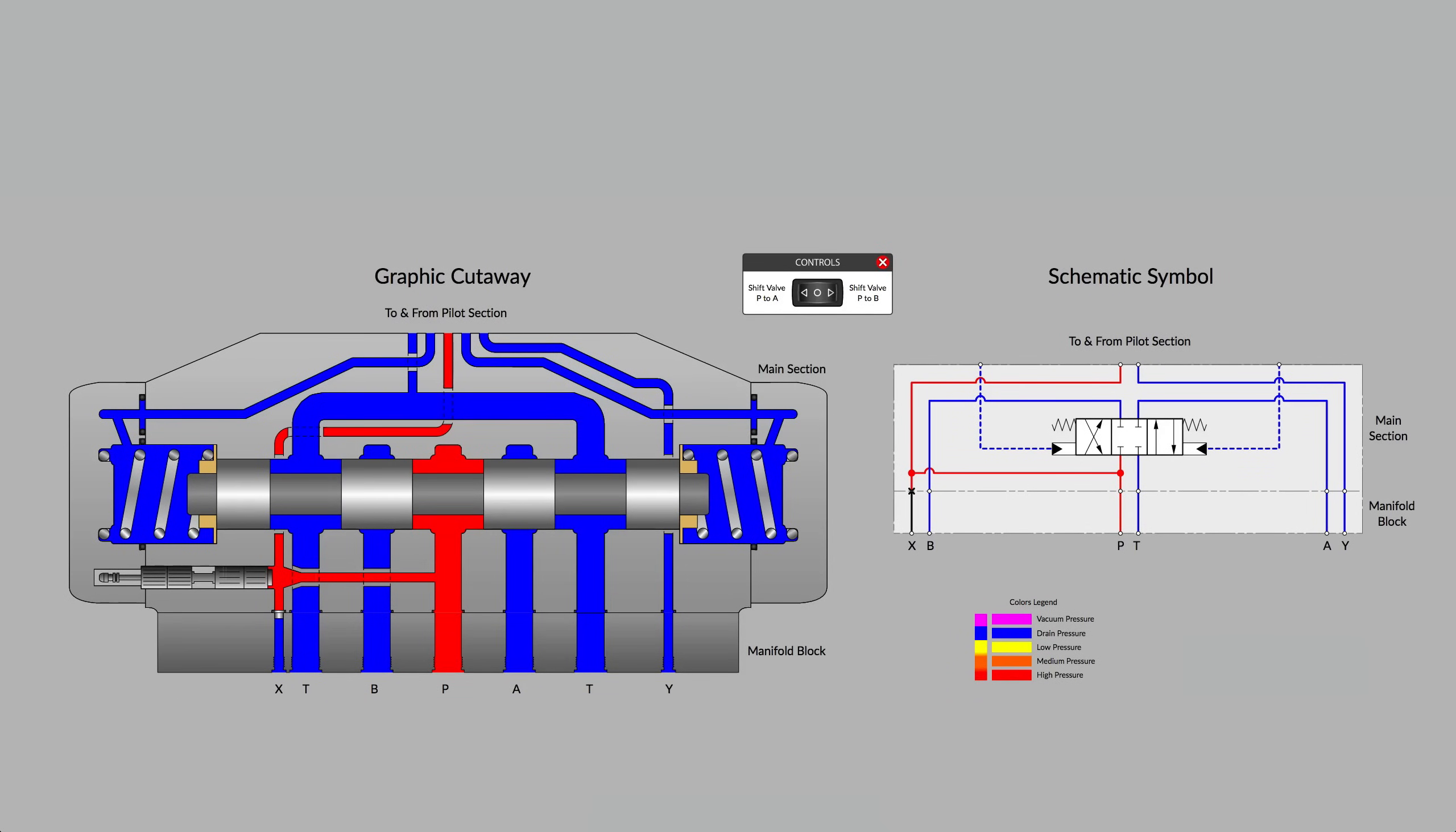The main section is nothing more than a very large spool-type directional control valve. The spool in these types of valves could easily be one inch in diameter or larger, 25 millimeters or more. The length could easily be a foot long, 30 centimeters. And flow rates could easily be 100 gallons per minute or 400 or 500 liters per minute or more. So these are very large valves.